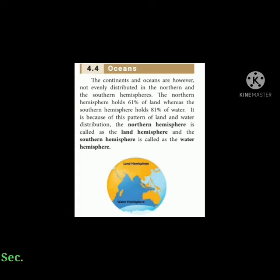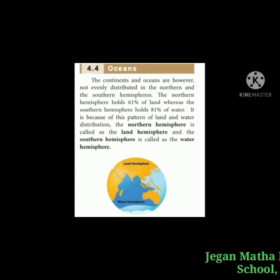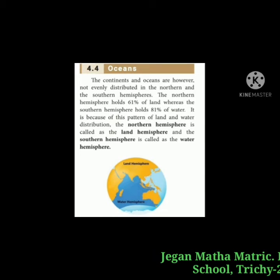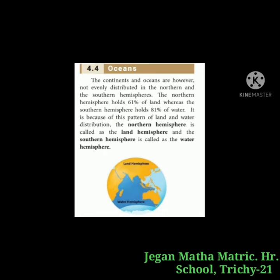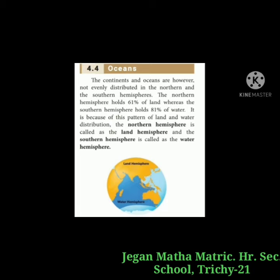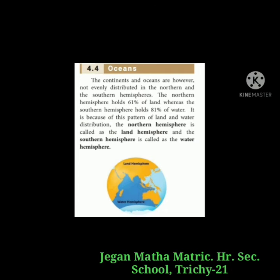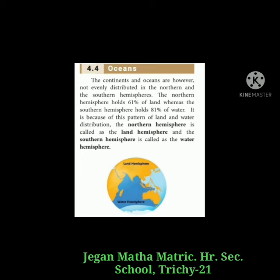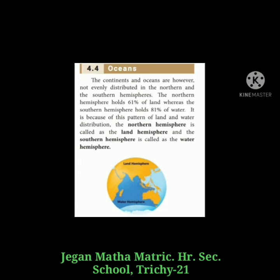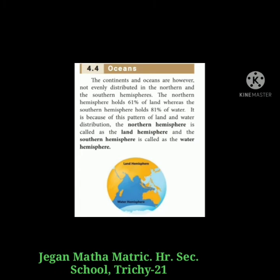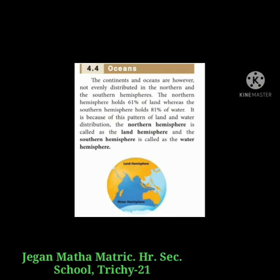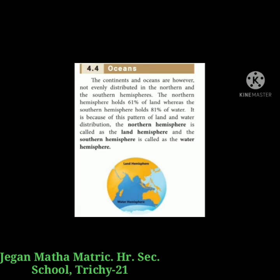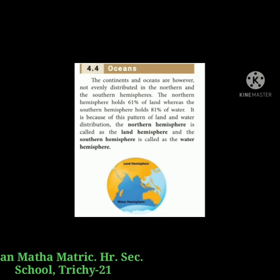The continents and oceans are not evenly distributed in the northern and southern hemispheres. The northern hemisphere holds 61% of the land, whereas the southern hemisphere holds 81% of water. It is because of this pattern of land and water distribution that the northern hemisphere is called the land hemisphere and the southern hemisphere is called the water hemisphere.